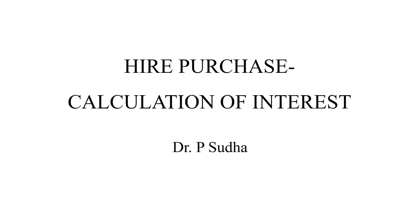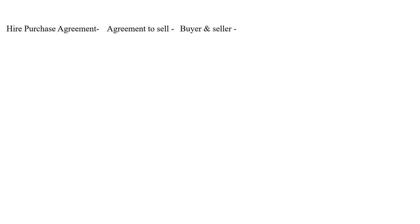Now, what is the hire purchase system? Hire purchase is an agreement — an agreement which is entered into for selling goods. There are two parties: the buyer and the seller. Under the hire purchase system, the buyer will be called the hire purchaser and the seller will be called the hire vendor. So hire purchase is an agreement to sell where the buyer is called the hire purchaser and the seller is called the hire vendor.